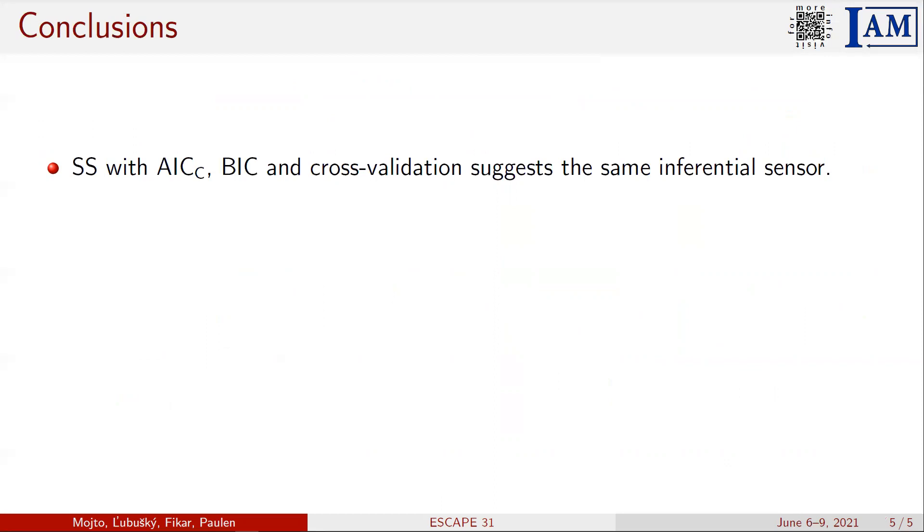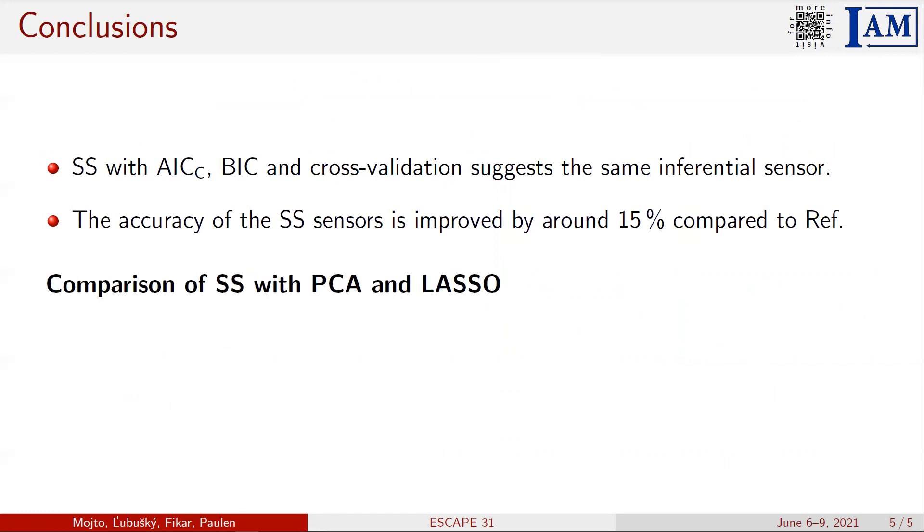The inferential sensor designed by subset selection outperforms the current inferential sensor by around 15%. In our further research, we already developed inferential sensors for the depropanizer column by principal component analysis and least absolute shrinkage and selection techniques.